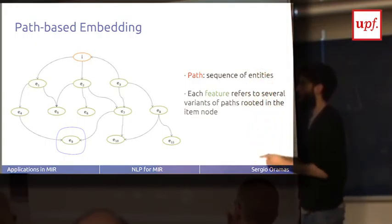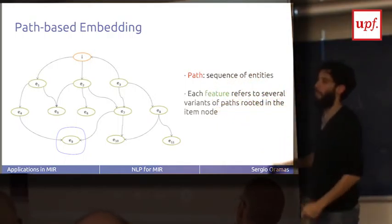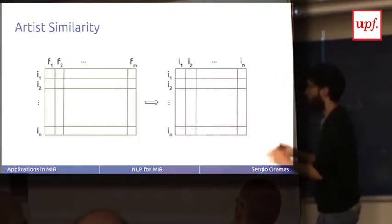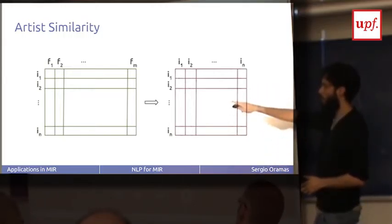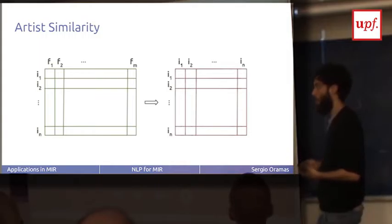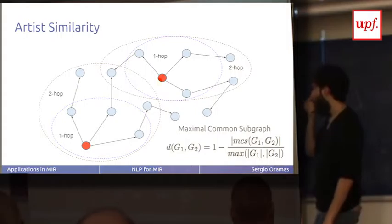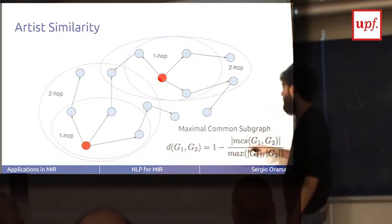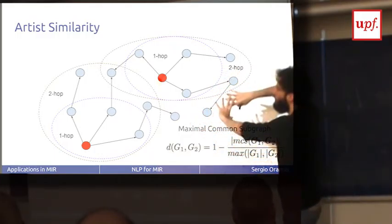Then we can also take into account the path — the sequence of nodes in the subgraph. This is what we call the path-based embedding. A subgraph may have different paths from the leaf nodes to the root. A path can also be divided into different subpaths. If you take all these possible subpaths, you can associate a feature to every different subpath that exists in the whole graph. This is another approach.